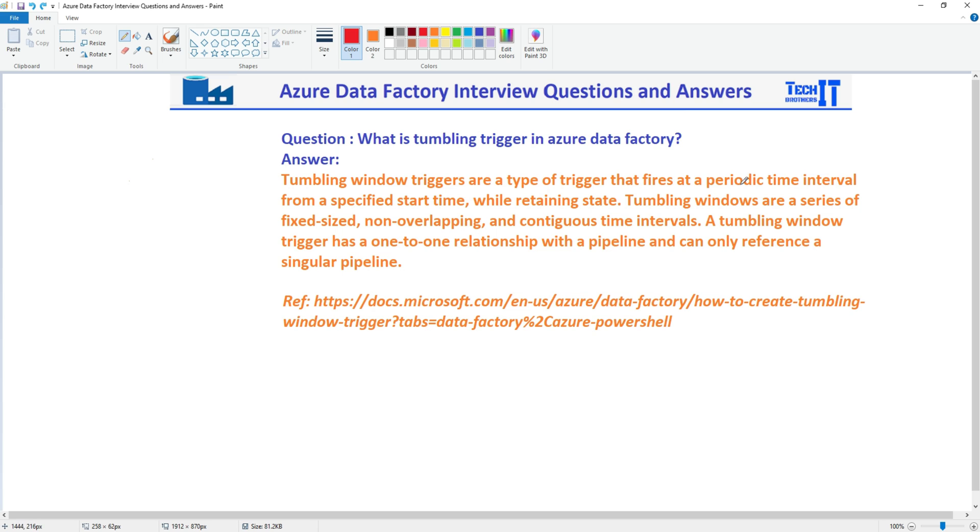the Tumbling Triggers are the type of trigger that fires at periodic time intervals from a specific start time and retains the state. So let's say if you are starting from some date and